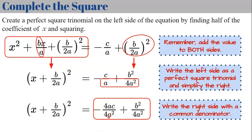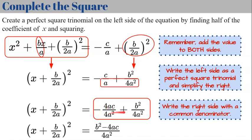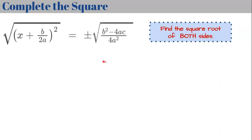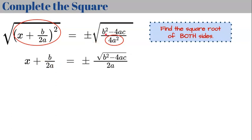We combine the numerators to write the right side as b squared minus 4ac all over 4a squared, with the negative sign attached to the numerator. Now we take the square root of each side. The left gives us x plus b over 2a, and the right gives plus or minus the square root of b squared minus 4ac over the square root of 4a squared, which simplifies to 2a since 2a times 2a equals 4a squared.